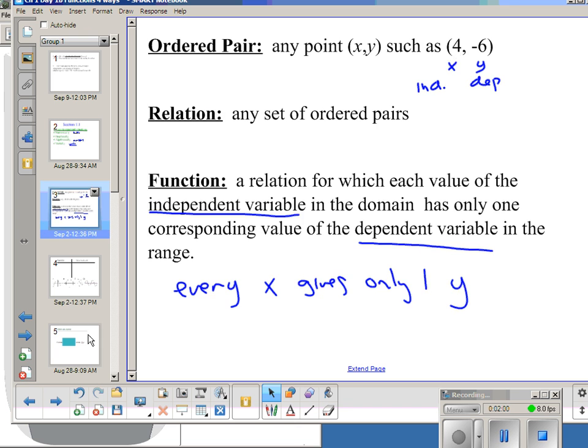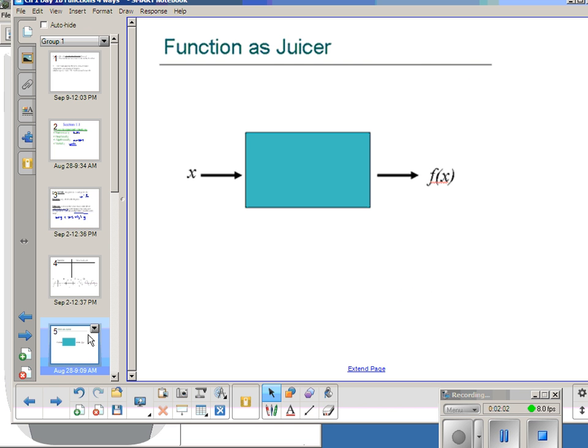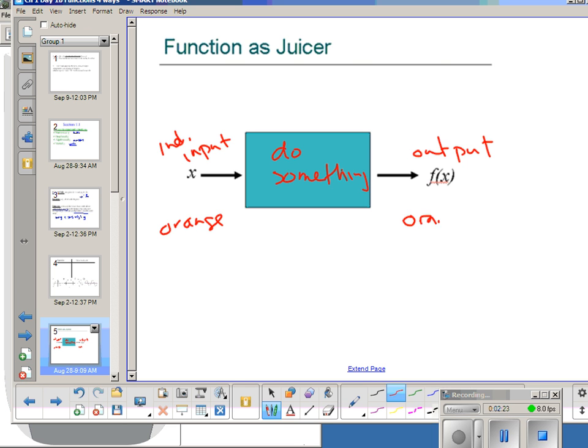If we think about our function as something like a juicer, it's a process. You take an input, our independent variable or our input, you do something to it, and you get our output. So I like to sometimes think about a function as a juicer. If I put in an orange into a juicer, out comes orange juice.